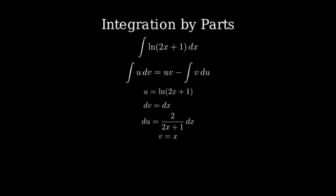Let's substitute these into our integration by parts formula. We get x times natural log of 2x plus 1 minus the integral of x times 2 over 2x plus 1 dx.